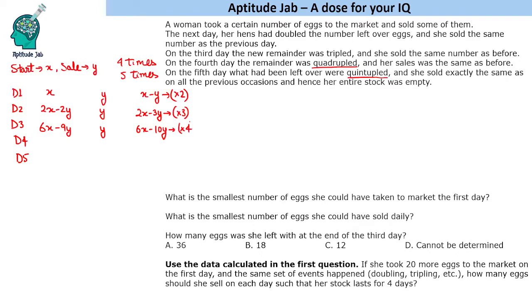This remainder becomes four times on the next day, so that is 24x minus 40y. She sells y again, so the remainder will be 24x minus 41y. Then again this is multiplied five times, so five times multiplication gives 120x minus 205y. She again sells y, so that becomes 120x minus 206y.